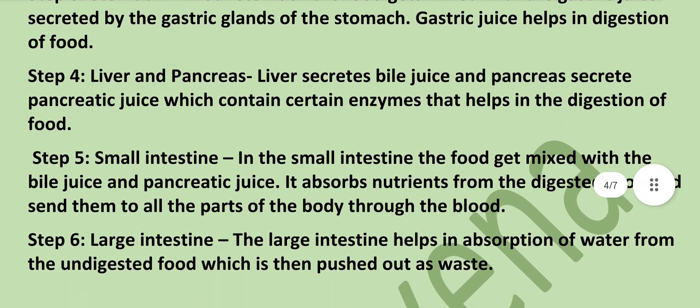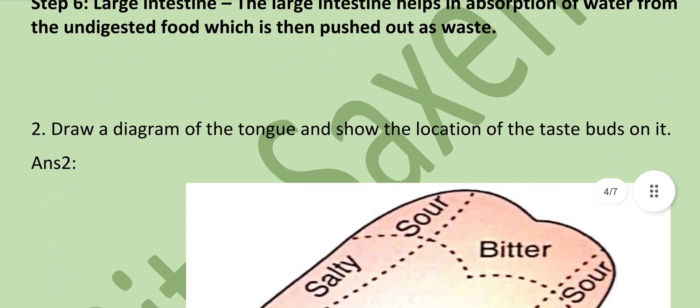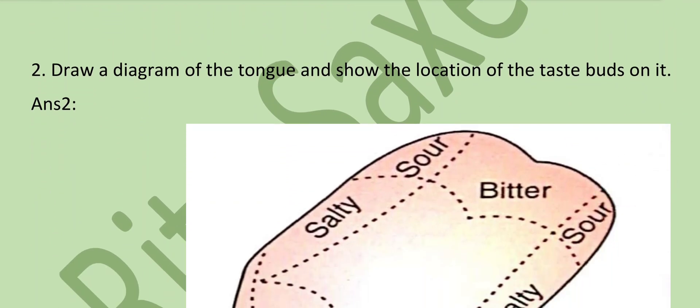Step five — Small intestine: the food gets mixed with bile juice and pancreatic juice. It absorbs nutrients from the digested food and sends them to all parts of the body through the blood. Step six — Large intestine: it helps in absorption of water from undigested food, which is then pushed out as waste from the anus.